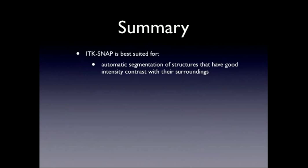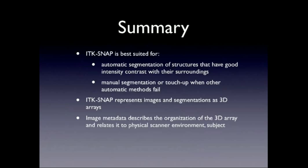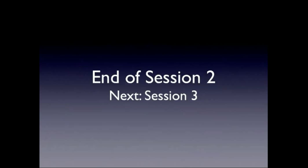To summarize: ITK-SNAP is best suited for semi-automatic and manual segmentation of structures that have good intensity contrast with their surroundings. It's good for manual segmentation or touch-up when automatic methods fail. We represent images as 3D arrays accompanied by metadata describing the organization of the array and its relation to the physical scanner environment and subject. We support many image formats but recommend working with NIFTI. There are three types of image layers: main image, overlays, and the segmentation layer.